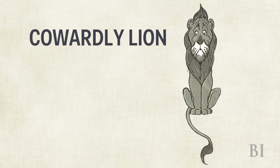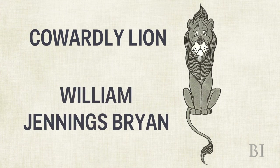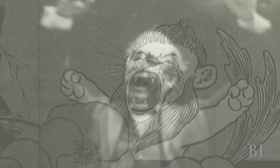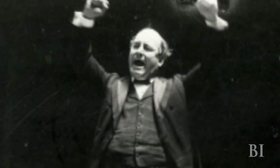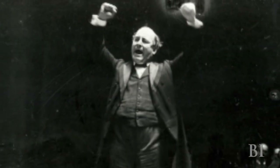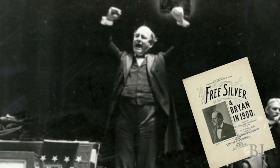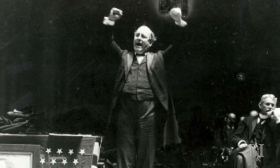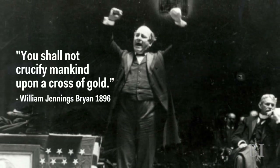The Cowardly Lion is William Jennings Bryan, a populist leader and the face of the free silver movement. He believed that adding silver to the gold standard would ease deflation and solve the nation's economic woes.